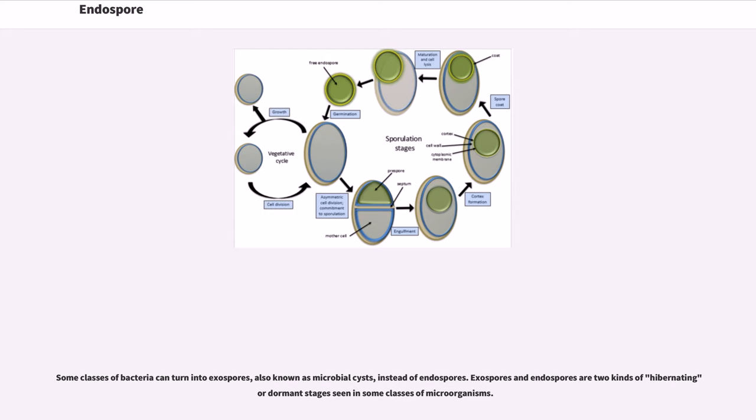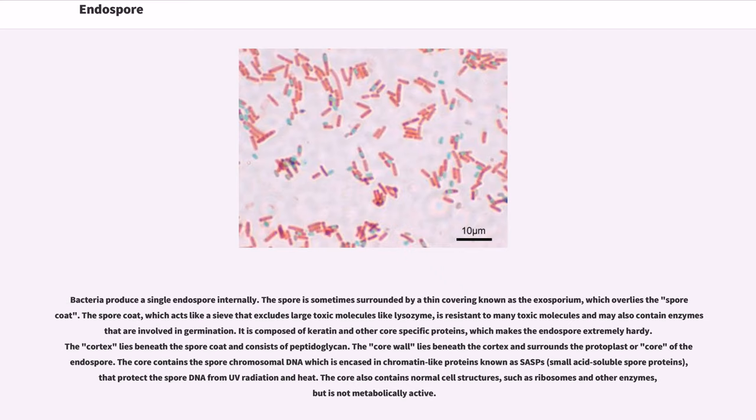Some classes of bacteria can turn into exospores, also known as microbial cysts, instead of endospores. Exospores and endospores are two kinds of hibernating or dormant stages seen in some classes of microorganisms. Bacteria produces single endospore internally.